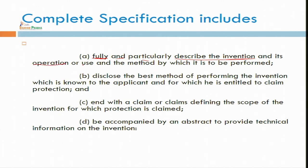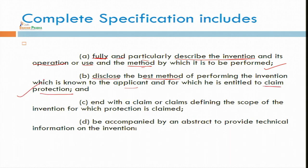In provisional specification, it is just a title or brief detail about your invention. But in complete specification, you have to give around 50 to 500 pages of detail about how your invention works, what are the uses, and what are the methods by which you are going to perform your invention having utility or inventive step. You have to disclose the best method of performing the invention known to the applicant or for which he is entitled to claim protection. You must give exact detail on the basis of which the patent expert or the controller will grant you the patent.